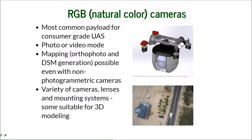Here we have a picture of one of the mounting systems — the camera with the gimbal — that can take oblique imagery. You can see how an RGB photo looks. This is one that we took at Kitty Hawk Beach. It's just a regular photo; there is nothing more to it than that.